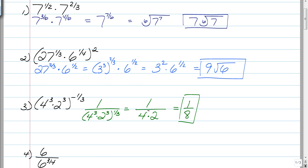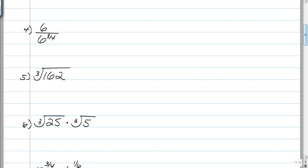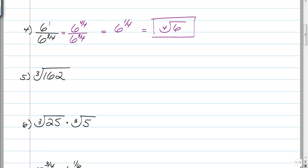A lot of these questions are really simple, but some are going to get a lot more complicated where you'll need common bases and all sorts of things. Number 4: when you divide, you subtract your exponents. This example has an exponent of 1 on top — that's like saying 6 to the 4 fourths over 6 to the 3 fourths. Subtracting gives us 4 fourths minus 3 fourths equals 1 fourth. So this simplifies to 6 to the 1 fourth, and your final answer is the fourth root of 6.